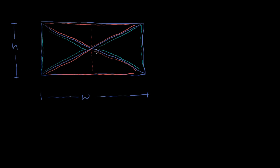All we have to do is really calculate the areas of the different triangles. Let's do the orange triangles first. And before doing that, let's remind ourselves: the area of a triangle is equal to one half times the base times the height of the triangle. That's just basic geometry.